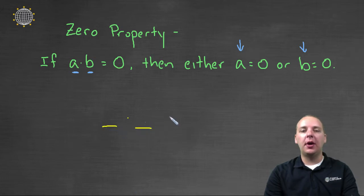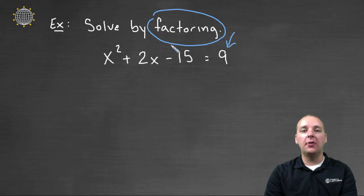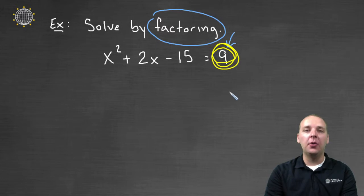If I asked you to create a product that gave us zero, one of the numbers, either this one or this one, would have to be zero. And so it's absolutely imperative if we want to solve a quadratic by factoring, then this absolutely has to be equal to zero on the right side.